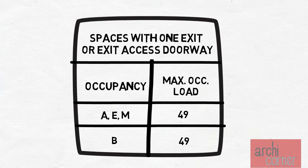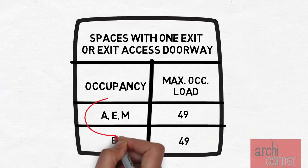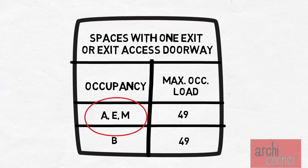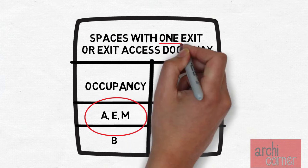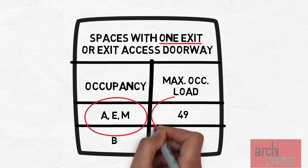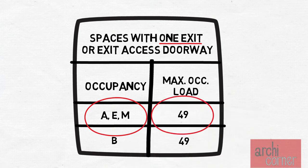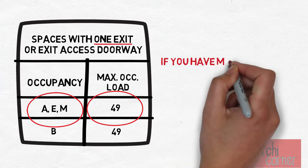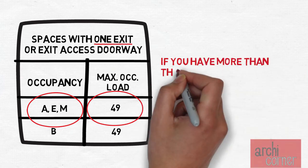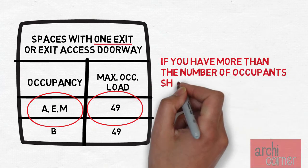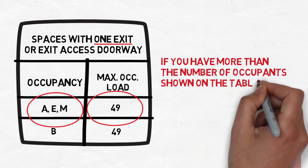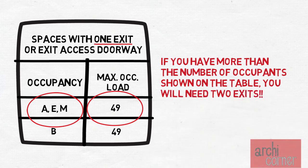For example, if you have a room or space that is considered an A3 occupancy, and looking at the IBC table, the table states that A occupancies with one exit can have a maximum of 49 occupants. This means that if you have 50 occupants or more in an A3 area, you will need two exits.